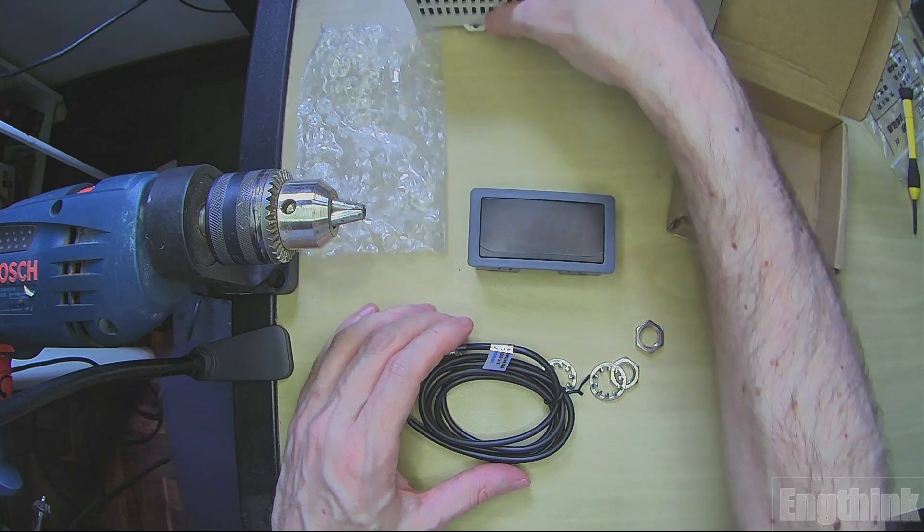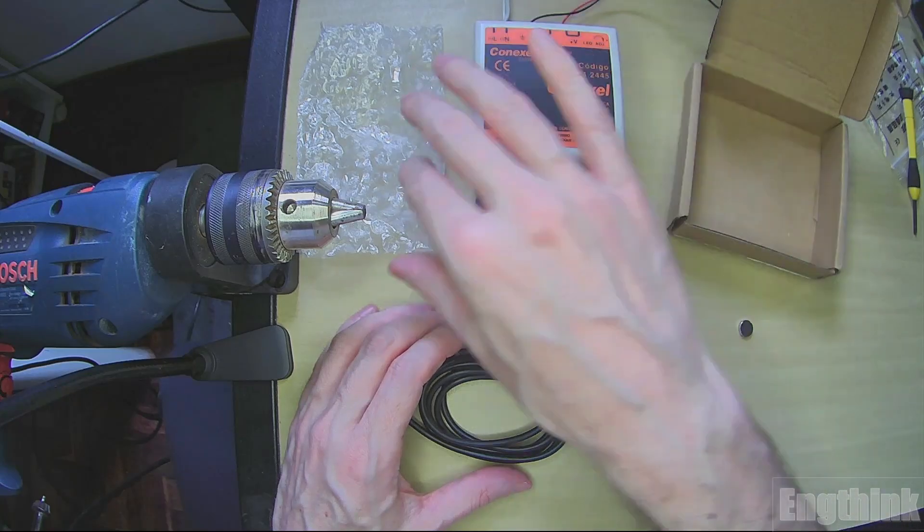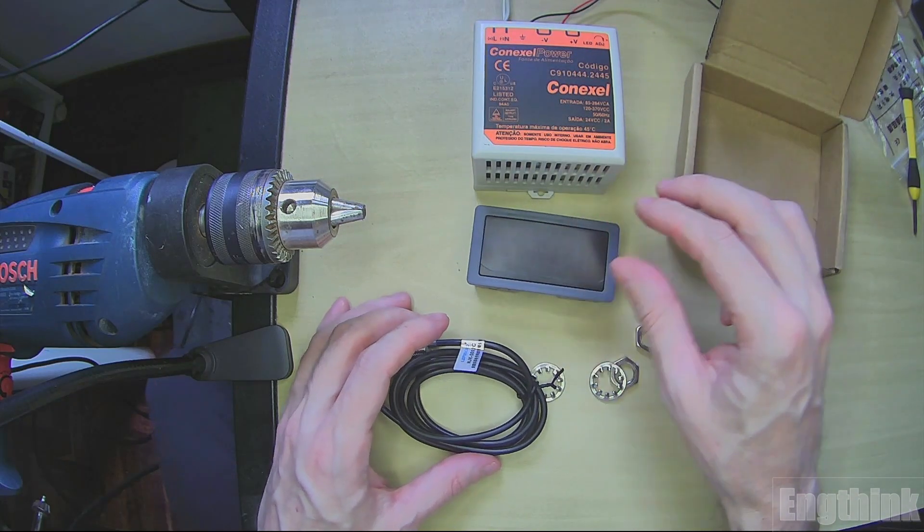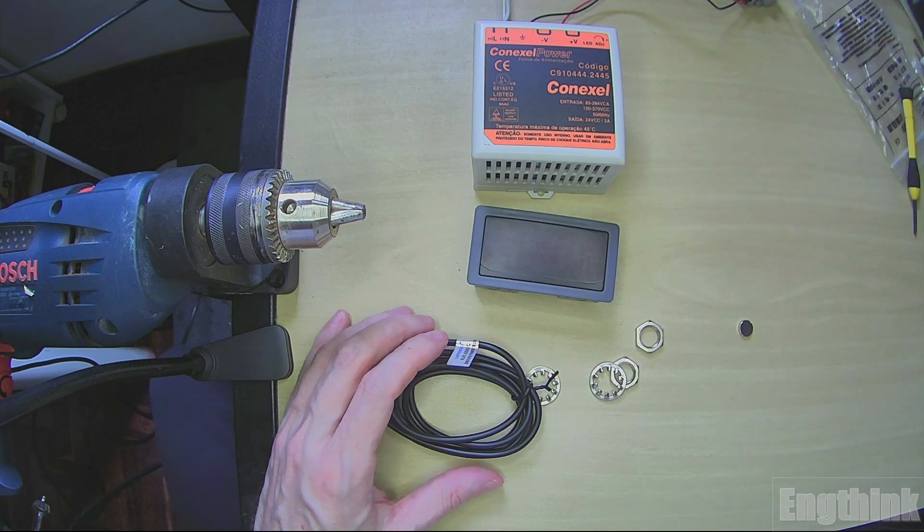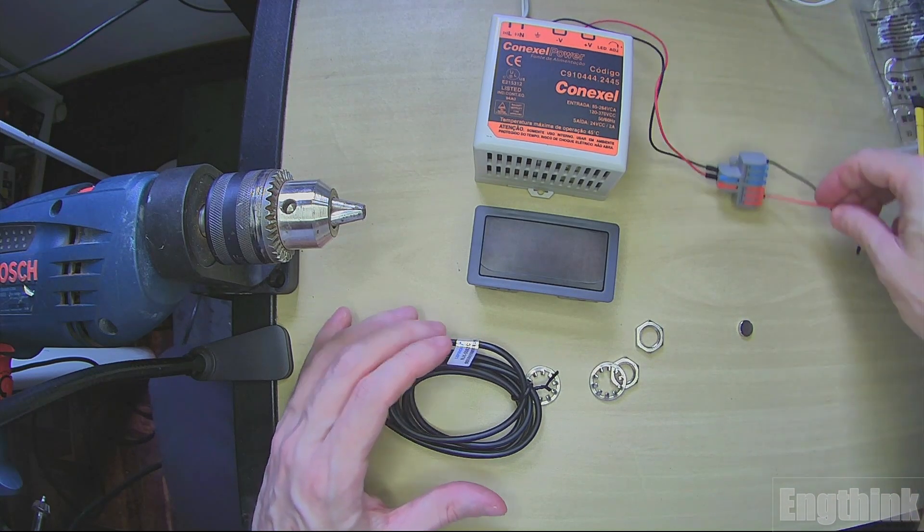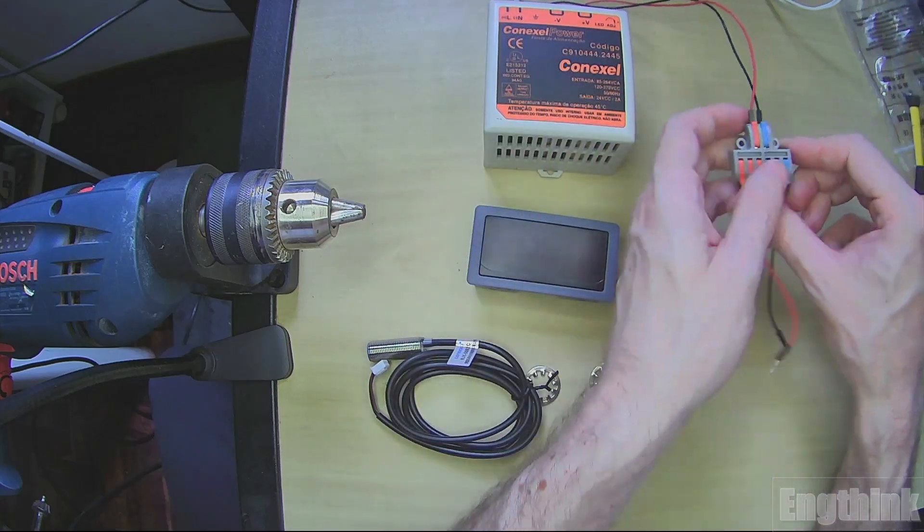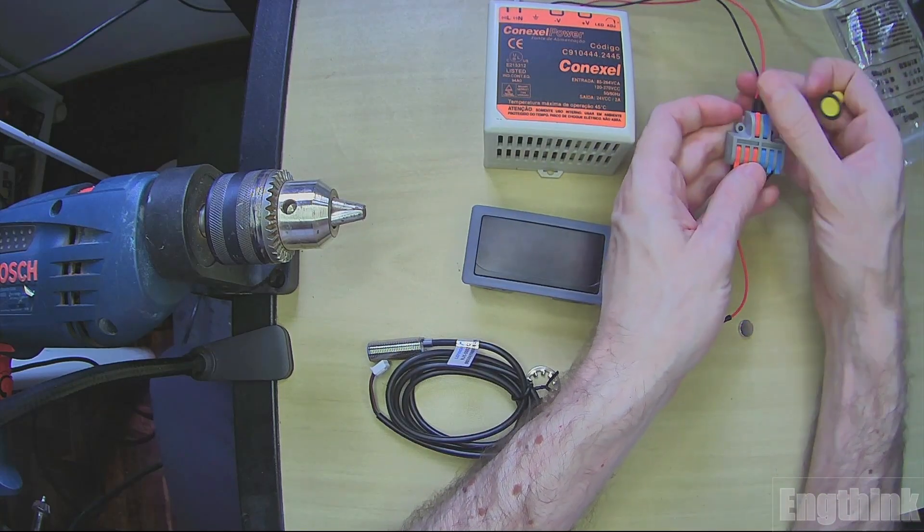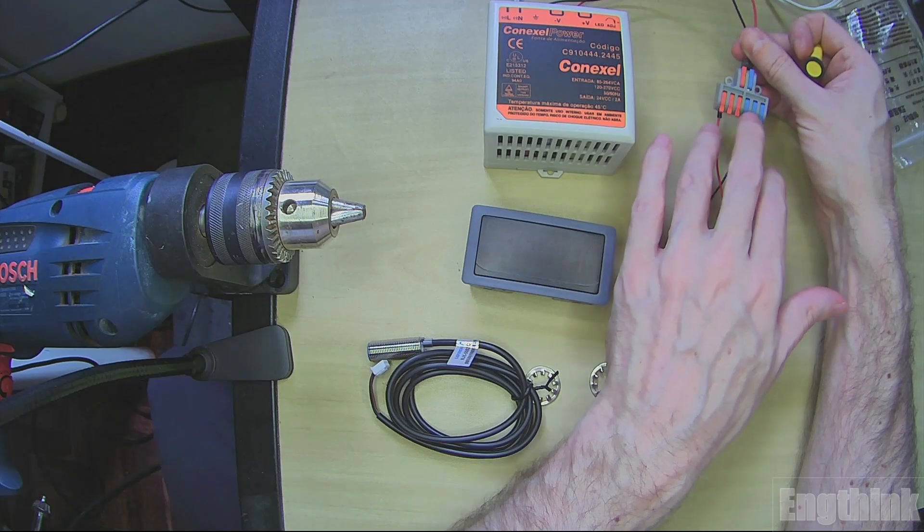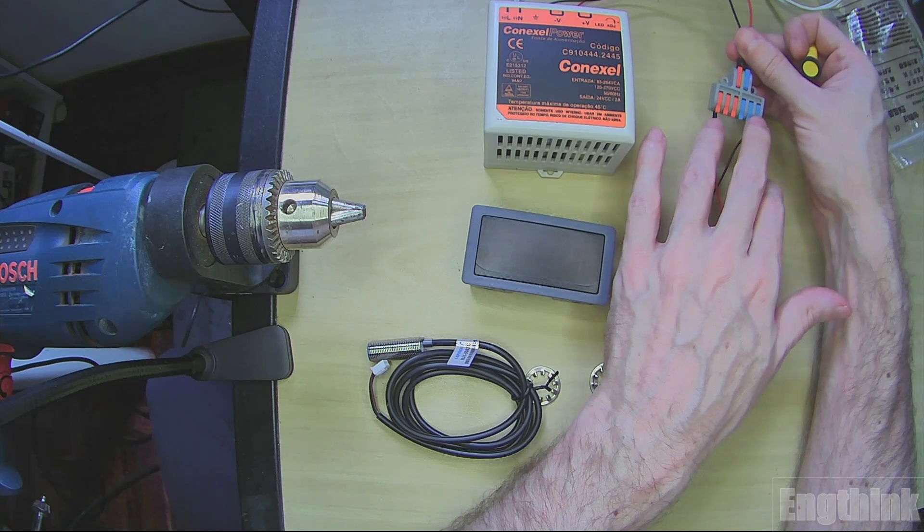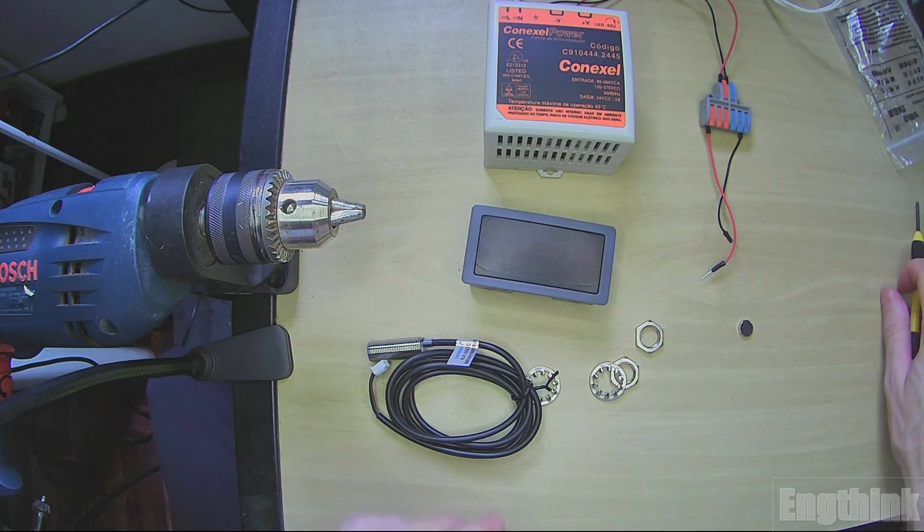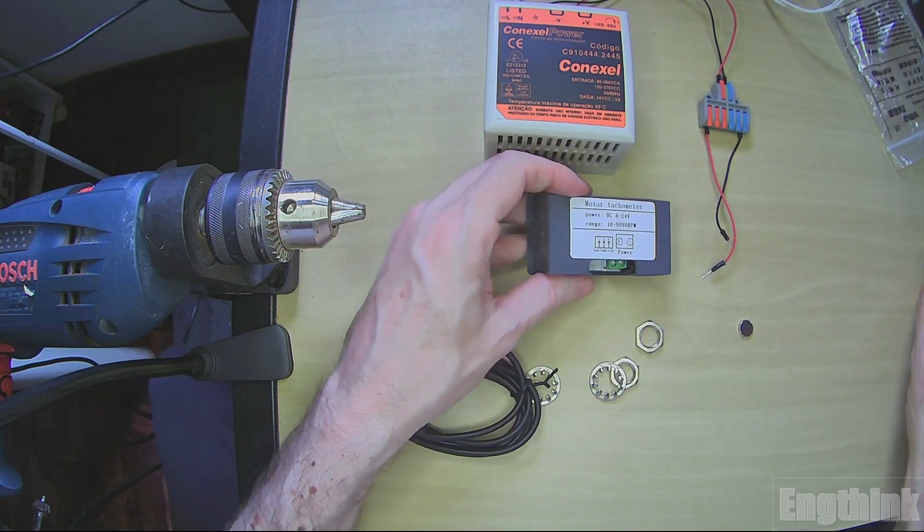So basically to use these 24 volts I have a power supply here. I have this connector right here with the positive and negative. We have the distribution for these three terminals on the left and three terminals on the right, with the blue color and the orange color. Let's proceed with the connections.